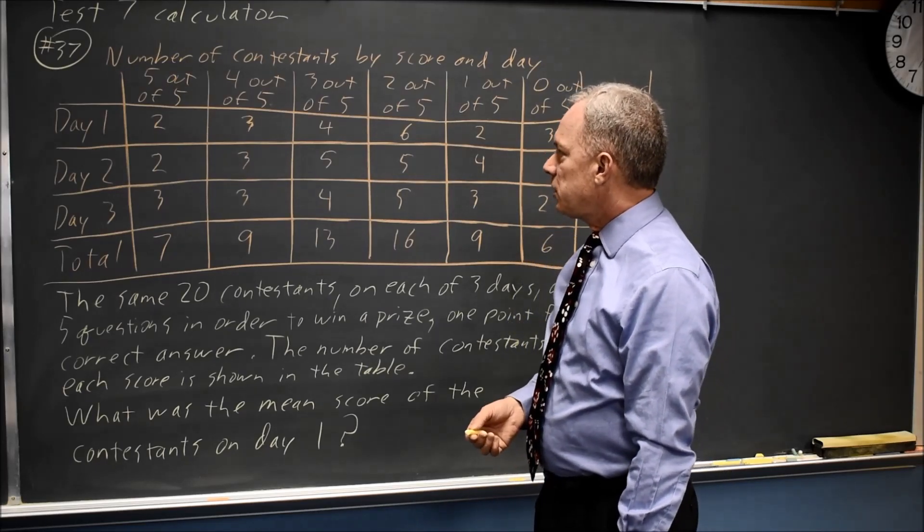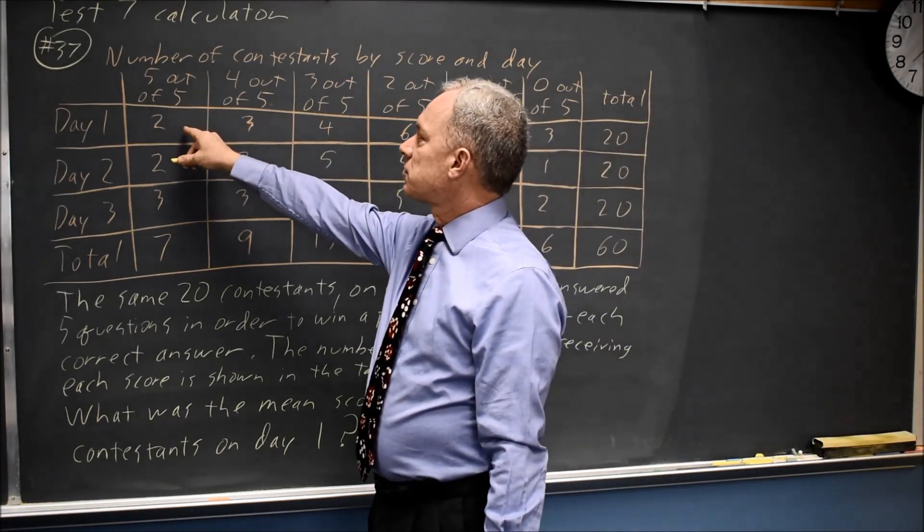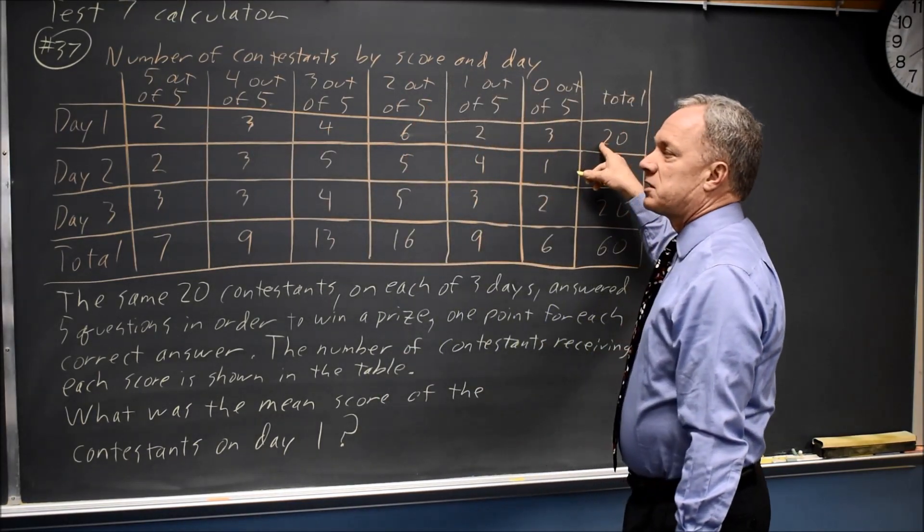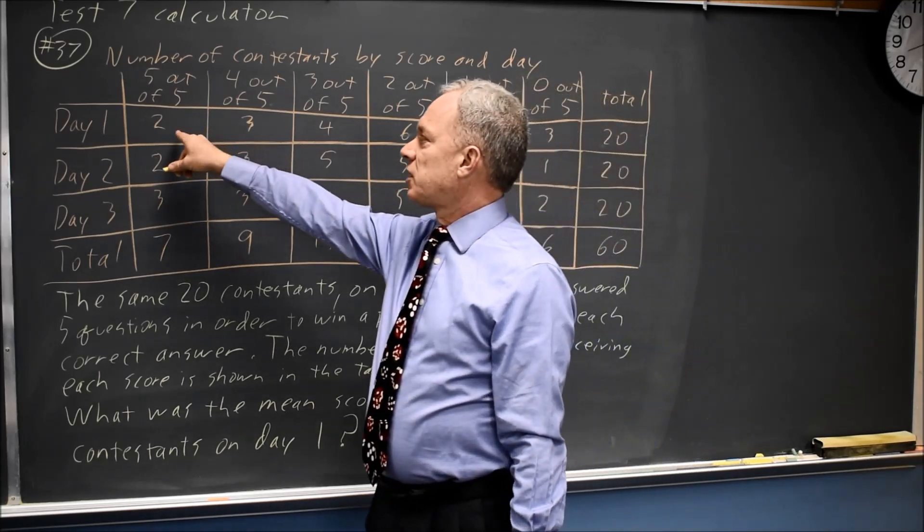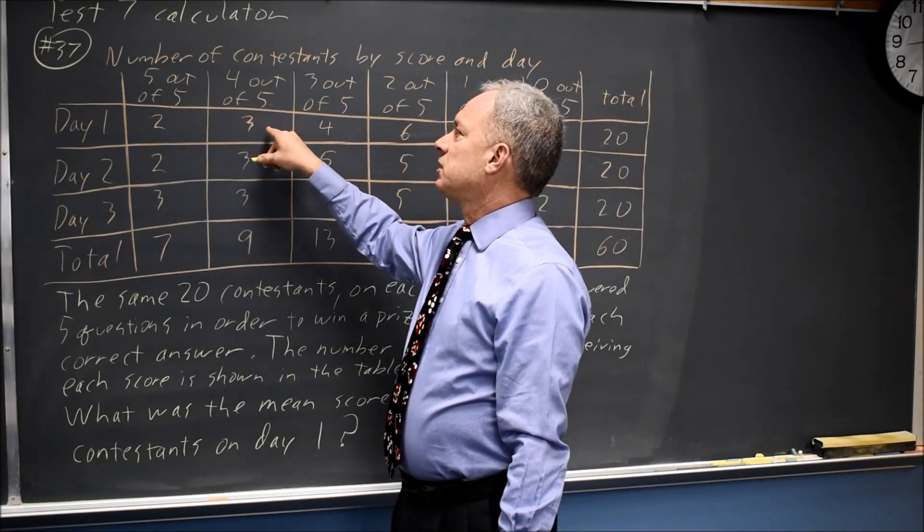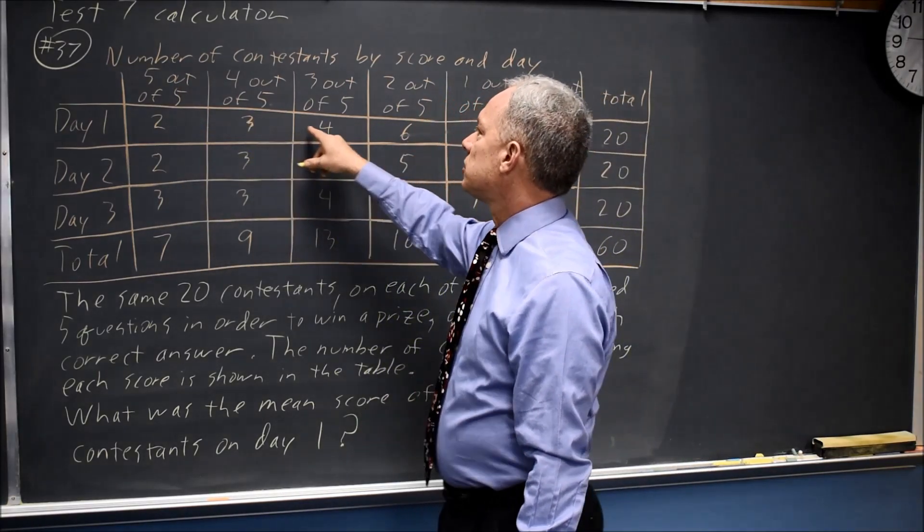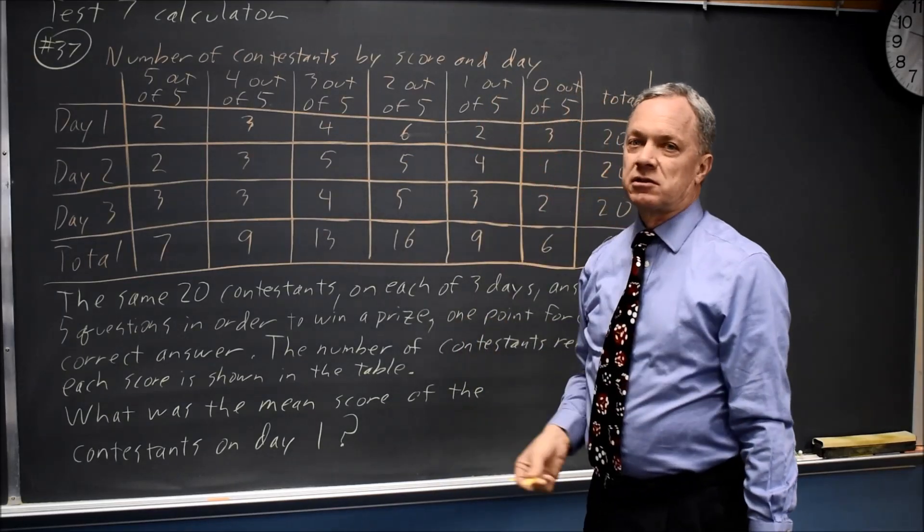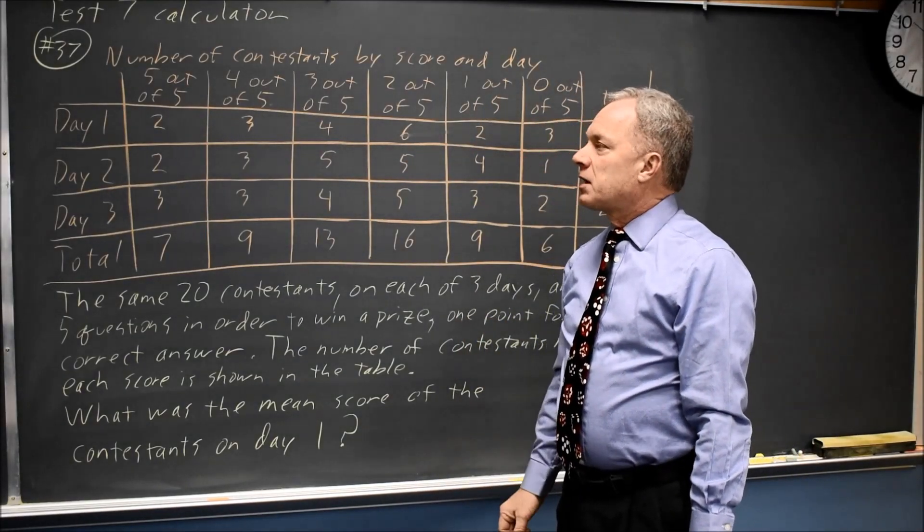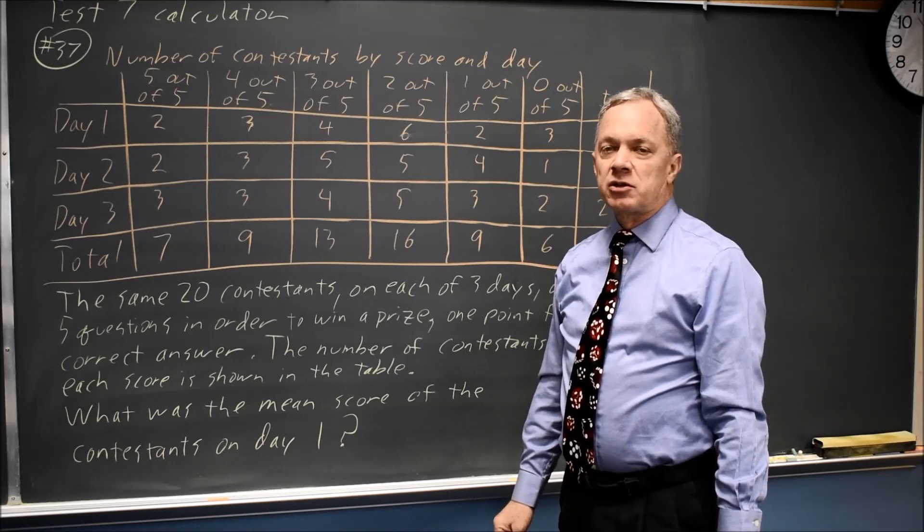So to find the mean for these values, I can write out all 20 values for the 20 contestants. There are two 5s, so that's 5 and 5, and three 4s, that's 4, 4, 4, etc., down to 3 scores of 0, and add them up and then divide by 20.